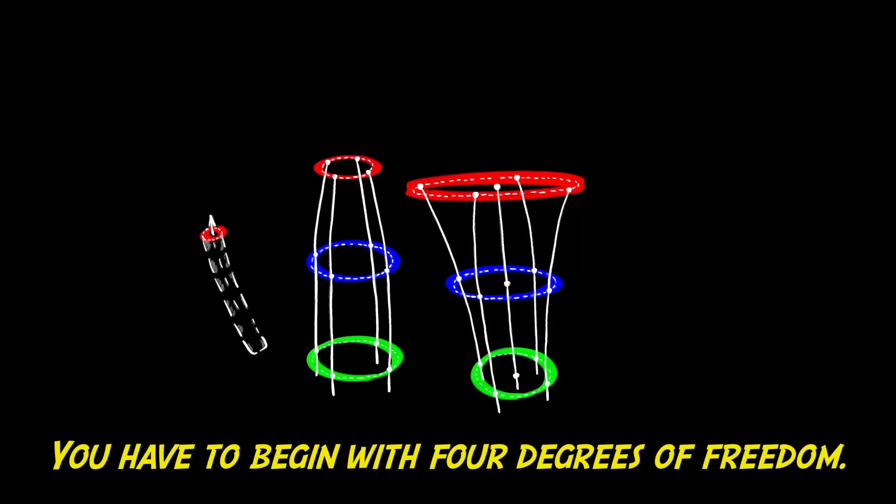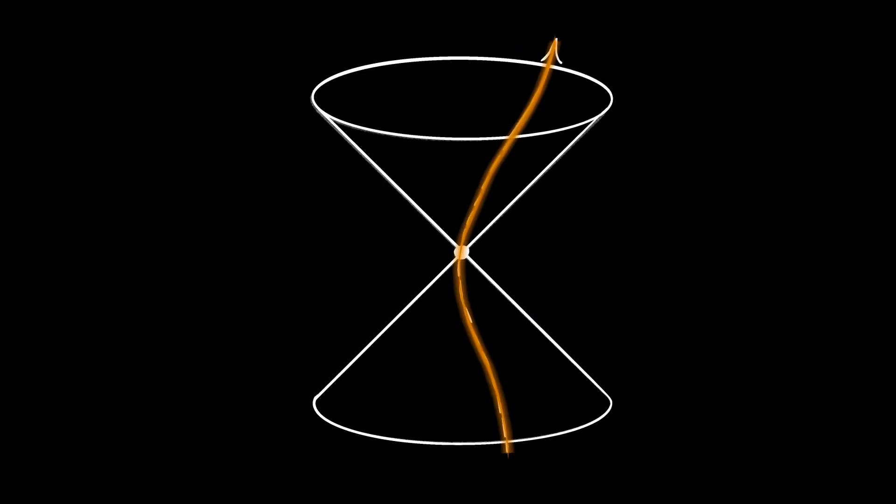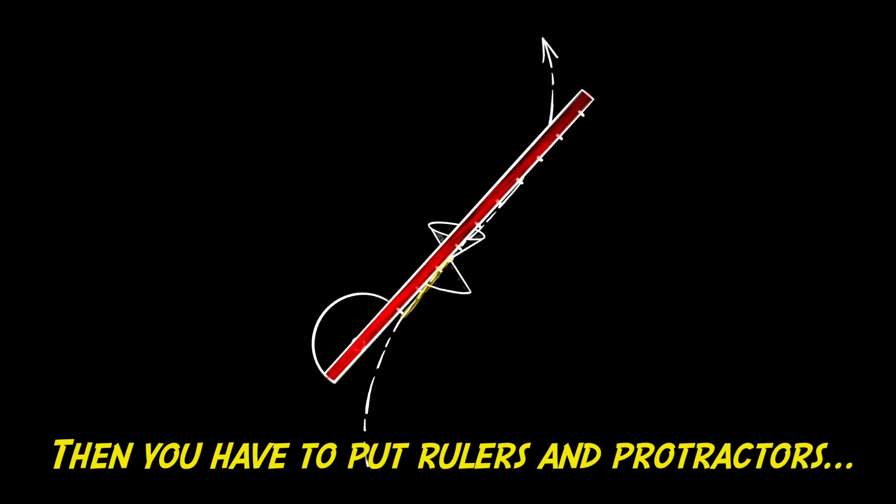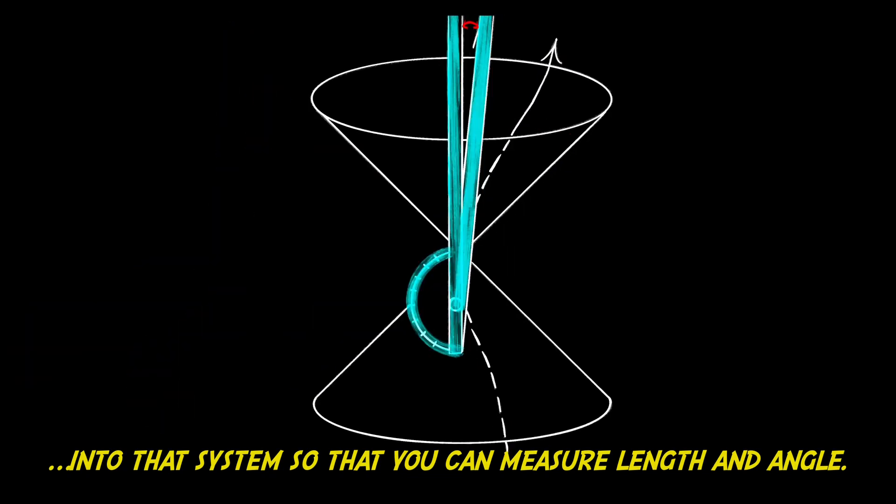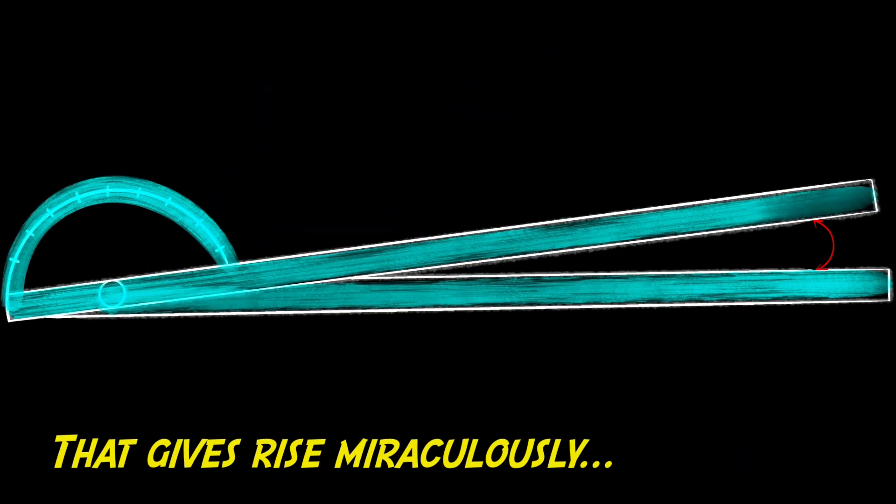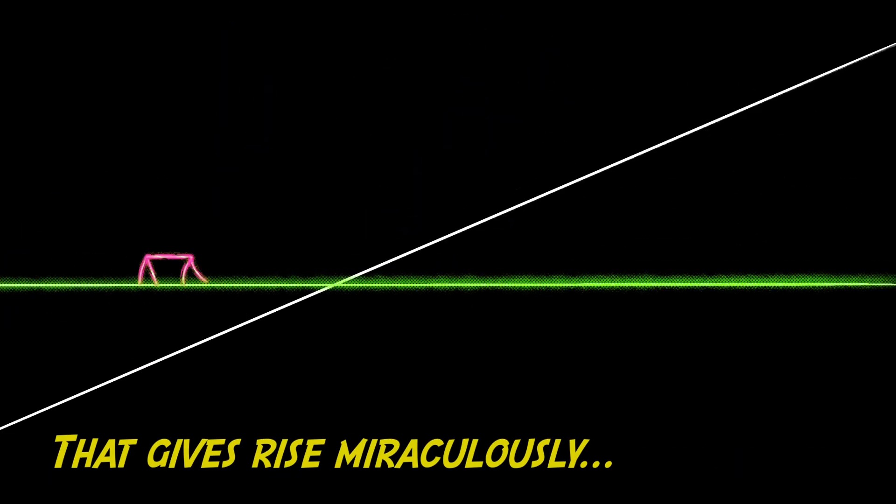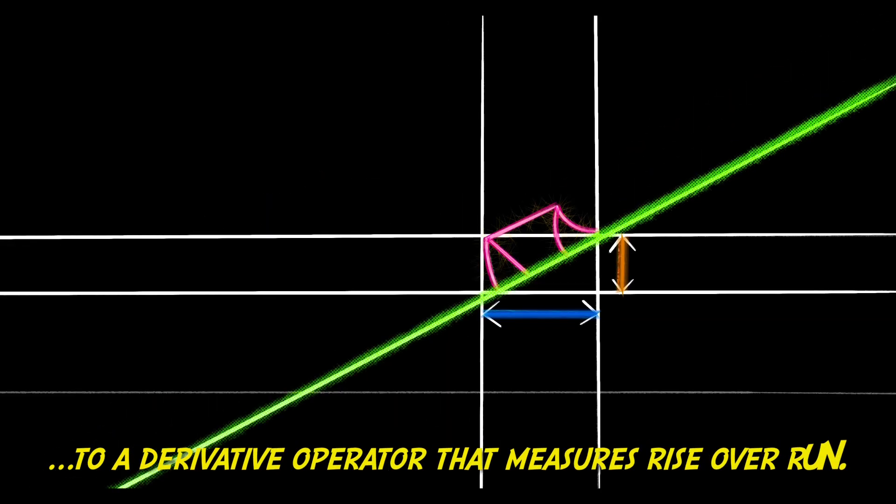You have to begin with four degrees of freedom, and then you have to put rulers and protractors into that system so that you can measure length and angle. That gives rise miraculously to a derivative operator.